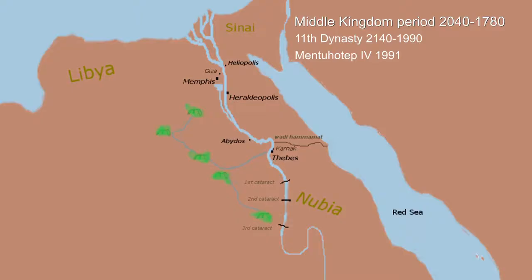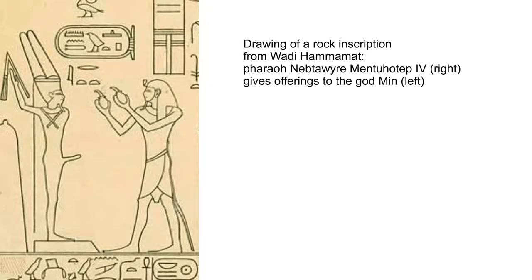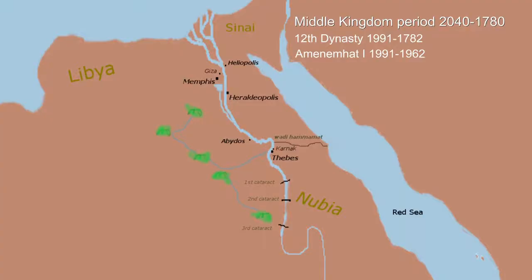Mentuhotep IV appears only on some king lists. He sent his military general down the Wadi Hamamat to find a stone suitable for the lid of his crypt, and apparently the general Amenemhat returned with the stone and brought it to Thebes. Then there is no record of exactly what happened, but Mentuhotep IV died and Amenemhat I became the pharaoh. We can only speculate about what happened between him acquiring the lid and him becoming pharaoh. Amenemhat brought an end to the 11th dynasty and was the first pharaoh of the 12th dynasty.